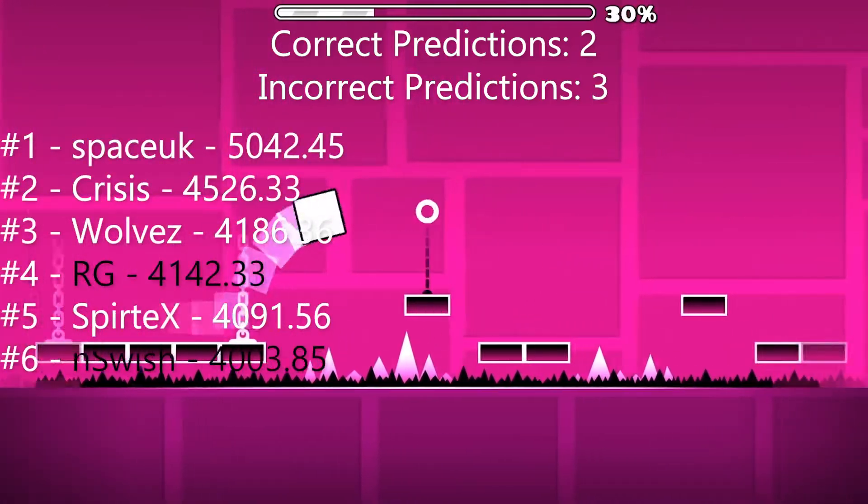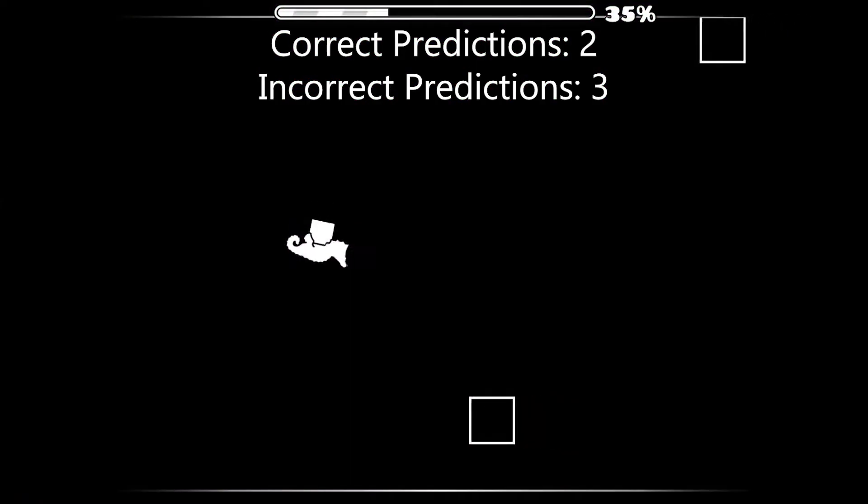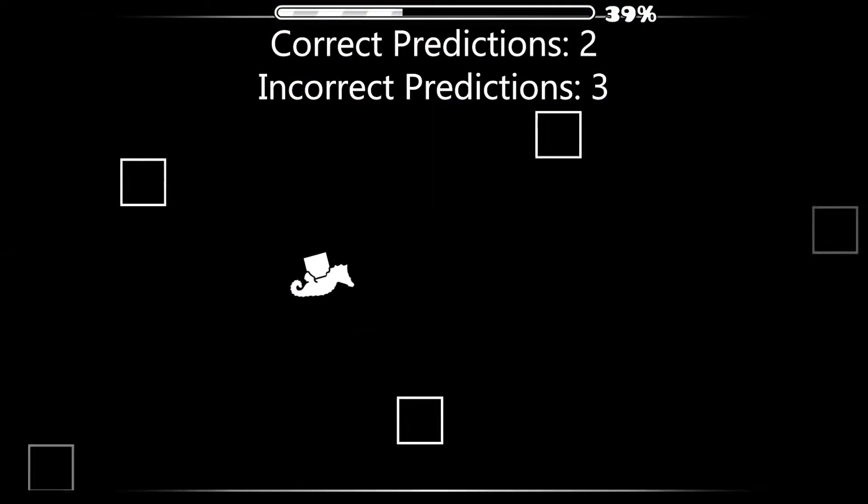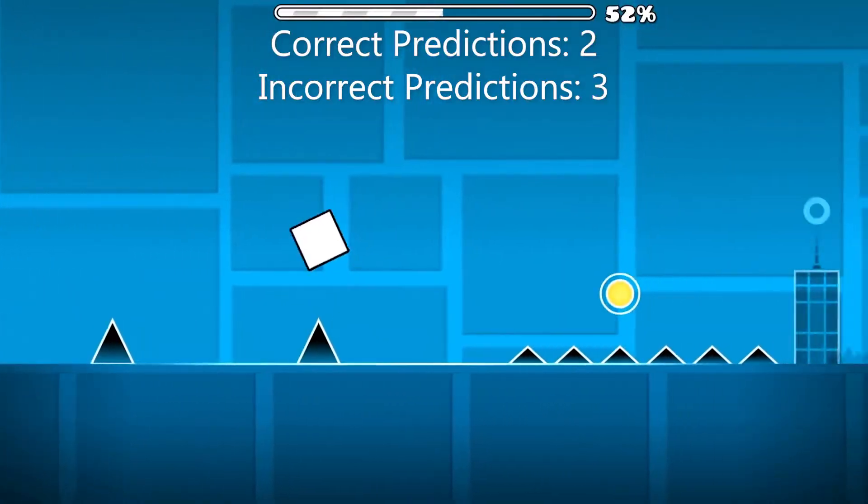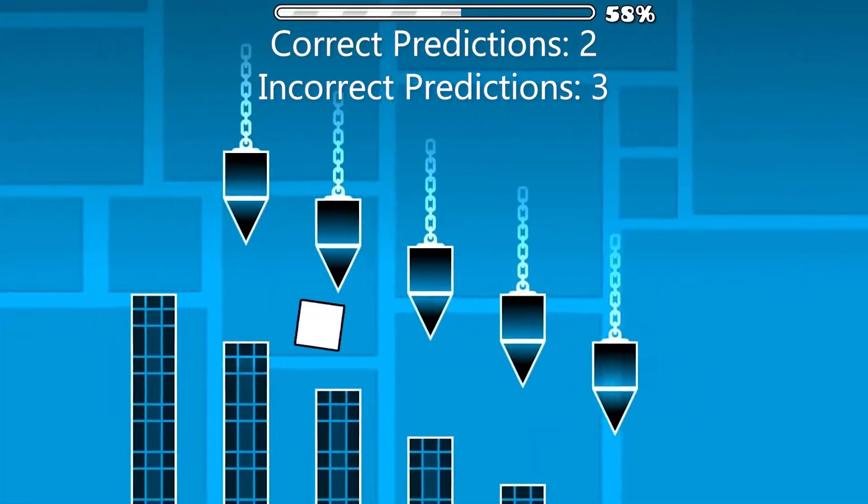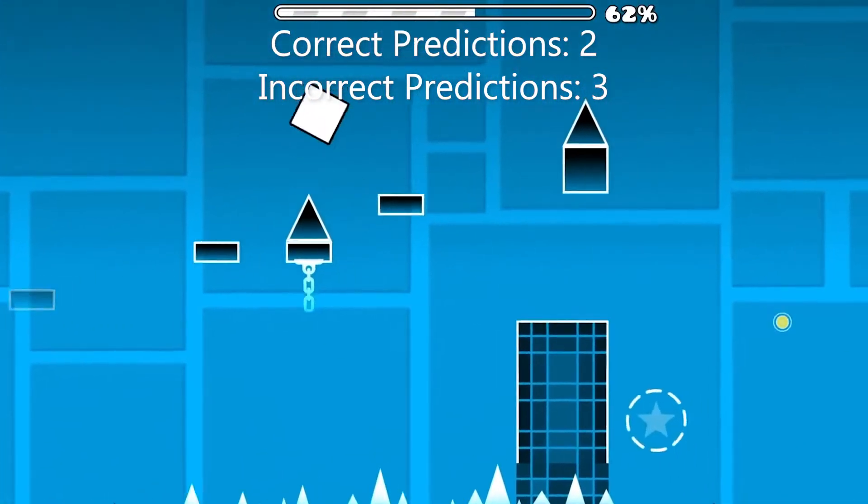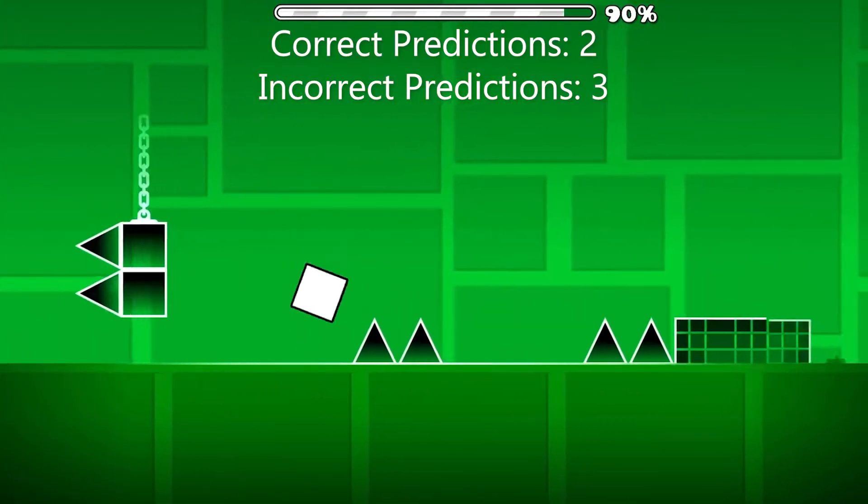However, there is a chance that someone could take the number one spot from me in 2021. One of those players is GD Wolves, who's a really talented Geometry Dash player who's capable of beating the top levels like The Golden and Tartarus.